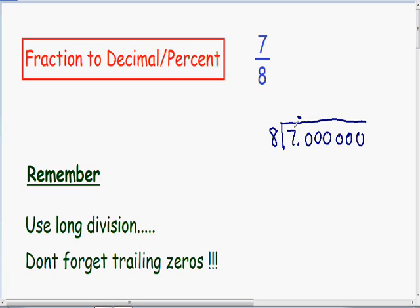Now we can start the division. 8 goes into 7 zero times, so we need to move on to the next digit. 8 goes into 70, 8 times. 8 times 8 is 64. And if we subtract 70 minus 64, we get 6.